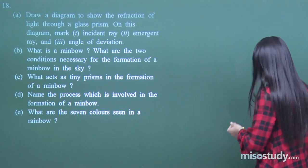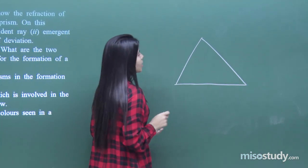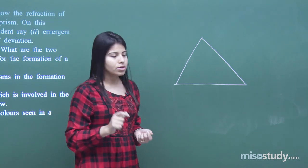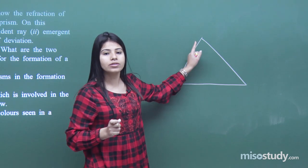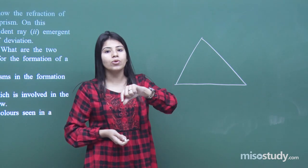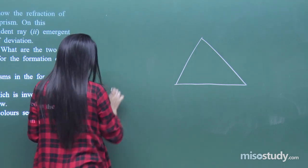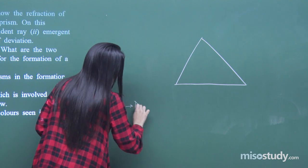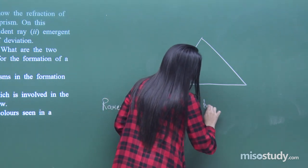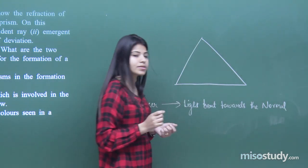We have to make a prism, mark the angle of incidence, the incident ray, the emergent ray, and the angle of deviation. First, when light enters from a rarer to a denser medium, the examiner wants to check your knowledge about refractive index and the bending of the refracted ray. When incident light goes from rarer to denser, it bends towards the normal. This is the concept we use to draw this diagram.